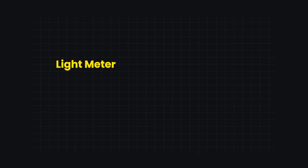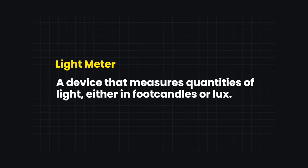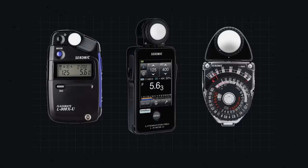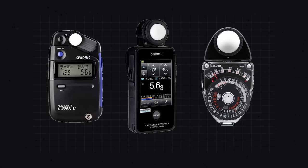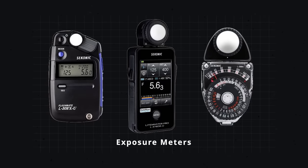A light meter is a device that measures quantities of light, either in footcandles or lux. Light meters that calculate camera settings based on these measurements are also referred to as exposure meters.